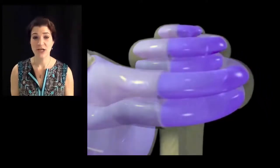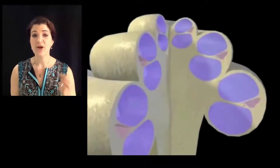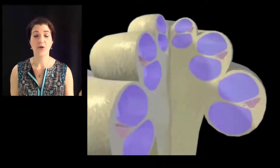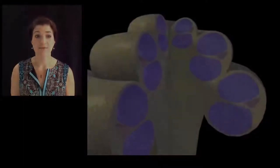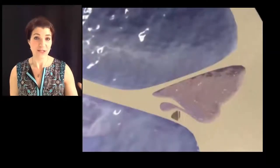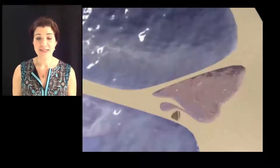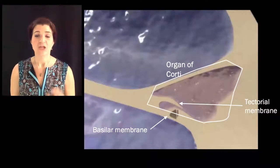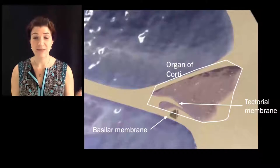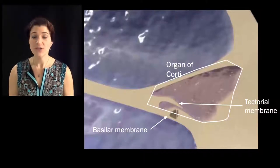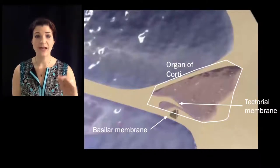Now let's zoom in on a cross section and see what's happening inside the cochlea. The cochlea is this long spiral structure, and the waves start near the oval window and then travel all the way through that spiral up toward the apex. The action of transduction happens here in the organ of Corti, which has highly specialized structures that respond to waves in the fluid. Two really important structures are the basilar membrane at the bottom and the tectorial membrane in the middle.